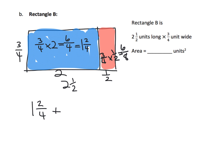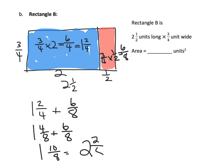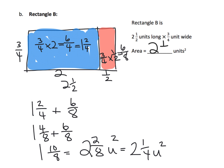Now we can add. We need common denominators, so that's one and four eighths plus six eighths, which gives us one and ten eighths, which simplifies to two and two eighths square units. Students could also change that to two and a quarter square units, which is our answer.